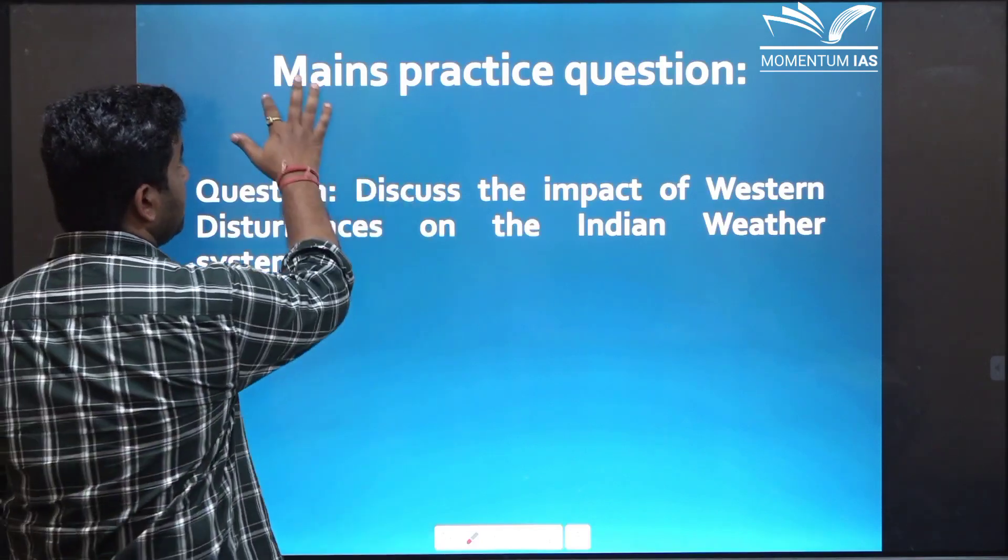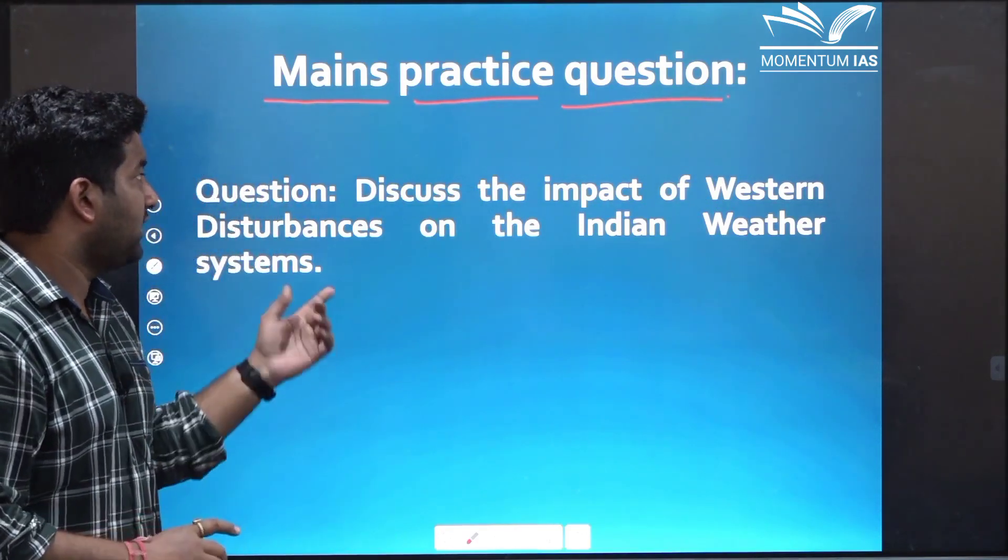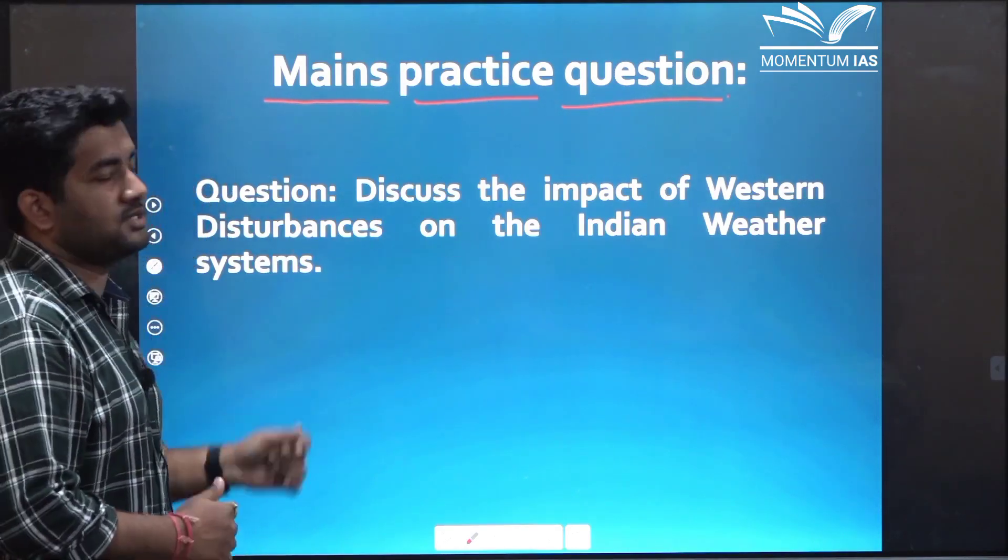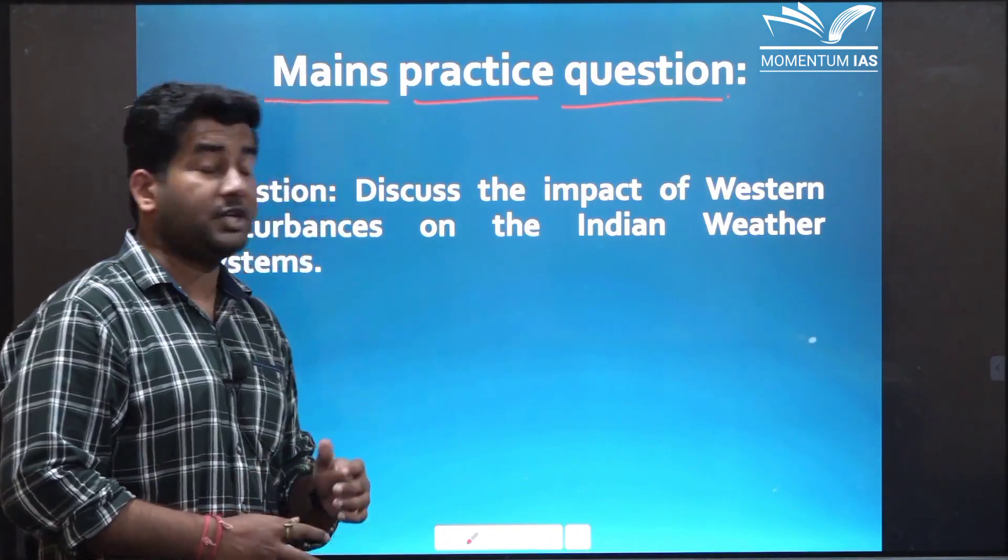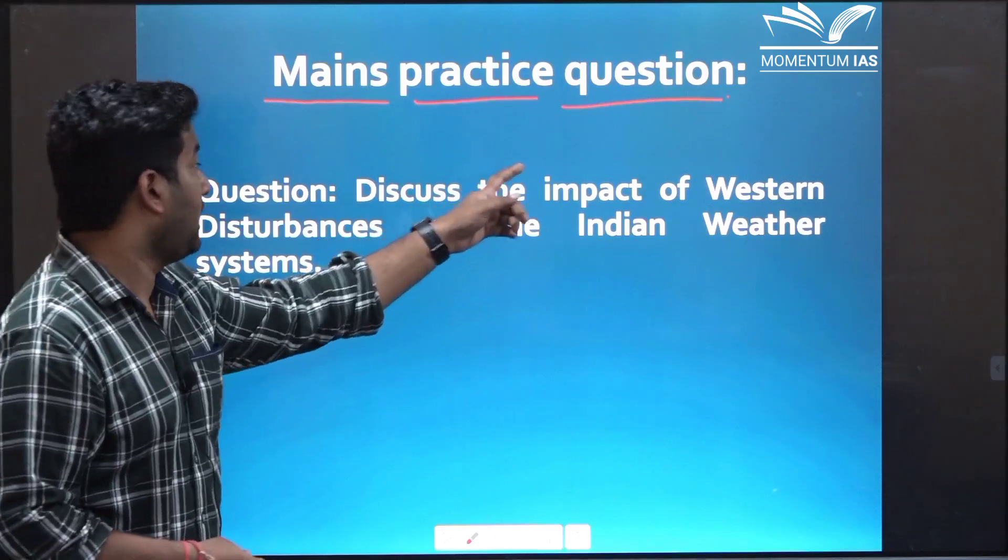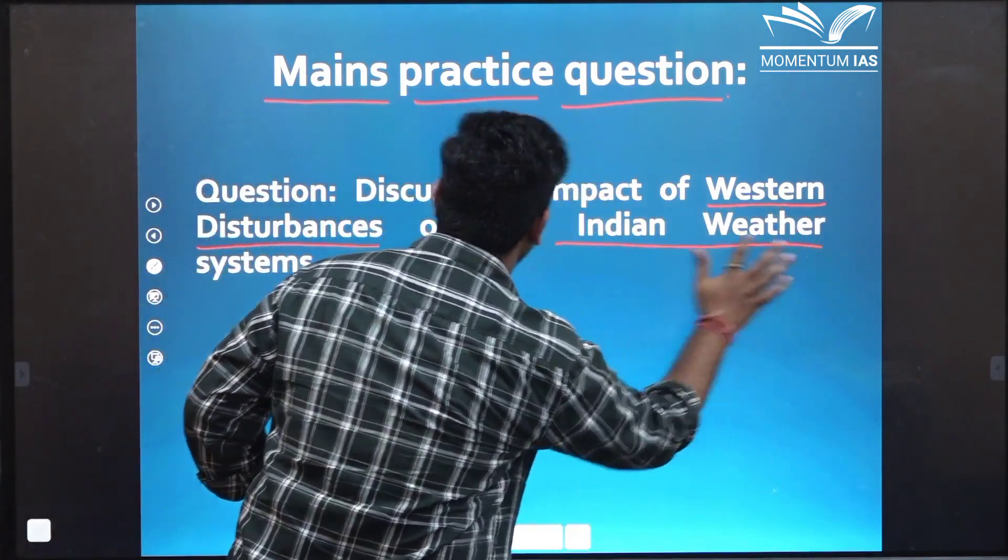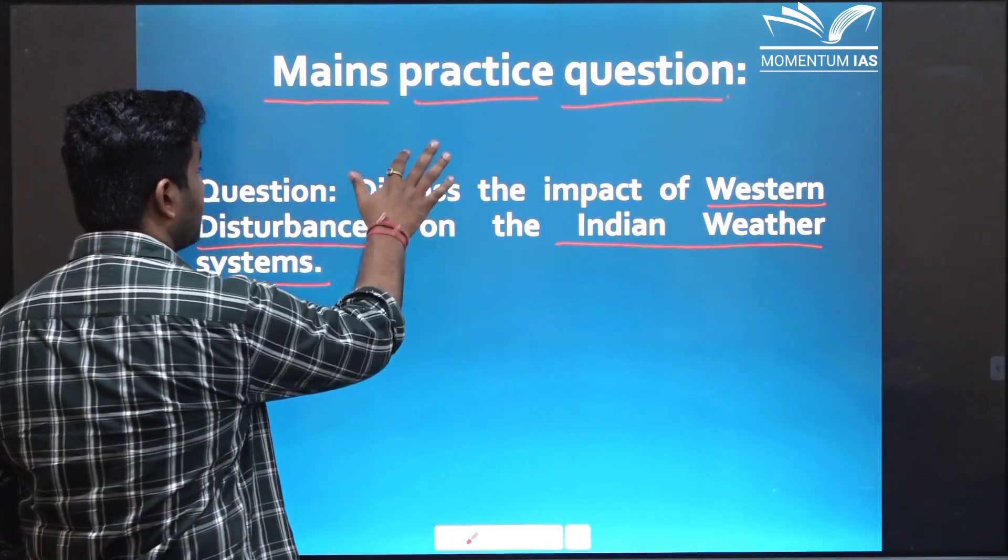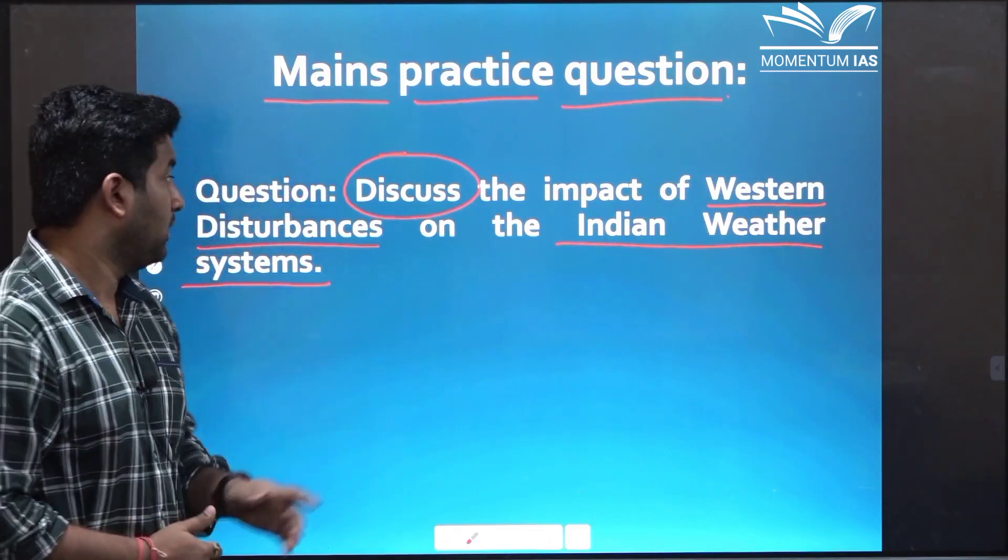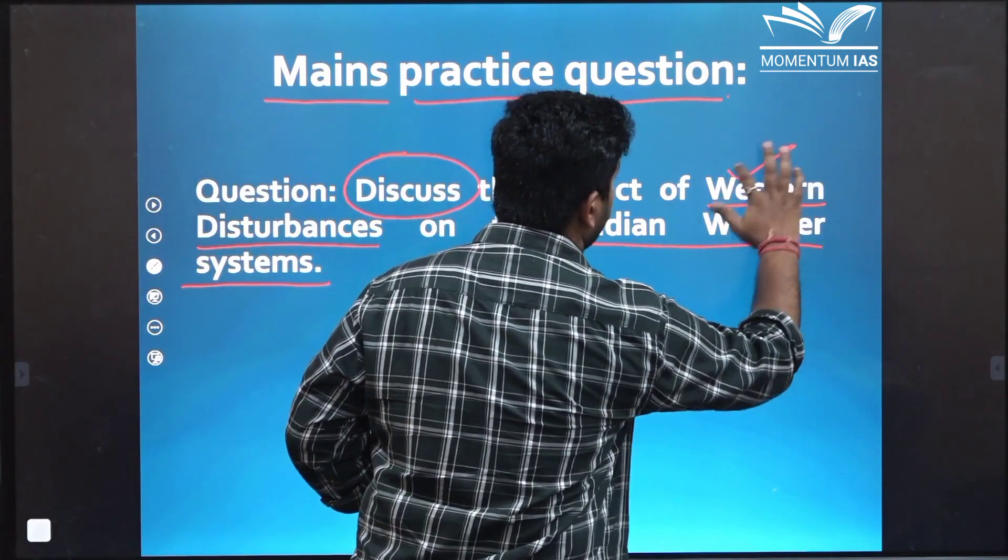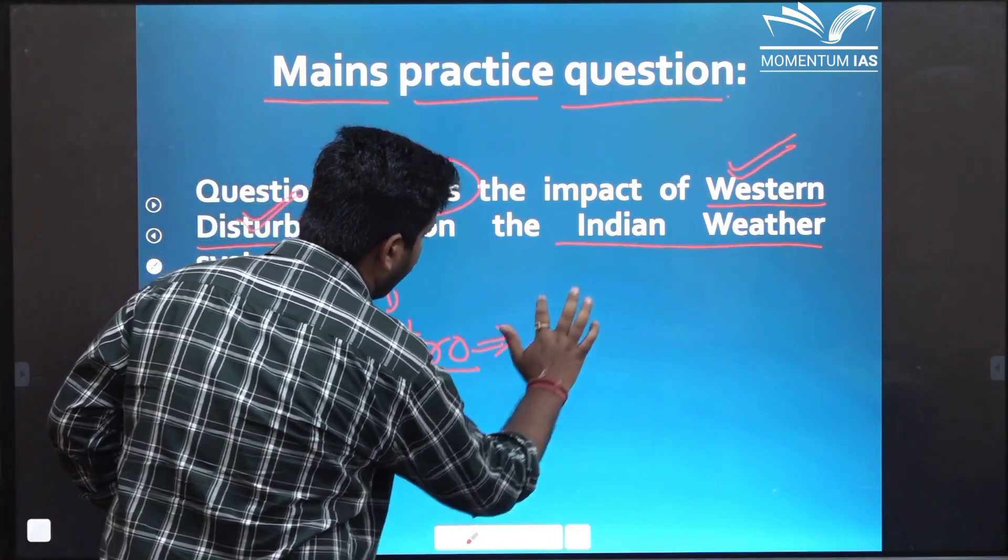Now let us come to the mains perspective. Because this is a singular topic and this can be asked anywhere in prelims or as well as in mains. So the question is, discuss the impact of western disturbances on the Indian weather system. Now prima facie it looks a very simple and straightforward question and that is true. But how you structure the question is what's going to fetch you marks. In this case there are two keywords one is western disturbances and other is Indian weather system and what we have to do with it we have to discuss this phenomena. So the approach to this question will be I want you all to attempt this question and then look at the approach. Approach to this question can be first we can introduce with what are western disturbances in the introduction.